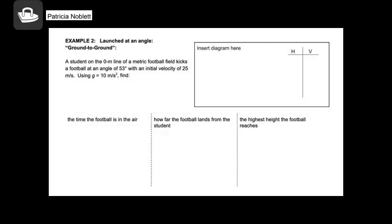This problem starts with a student on the zero-meter line of a metric football field — yes, there is a metric football field, I just made it up — and kicks a football at a given angle with an initial velocity of 25 meters per second. We're going to find the various things listed here. The first thing I want to do is capture the information that I have.